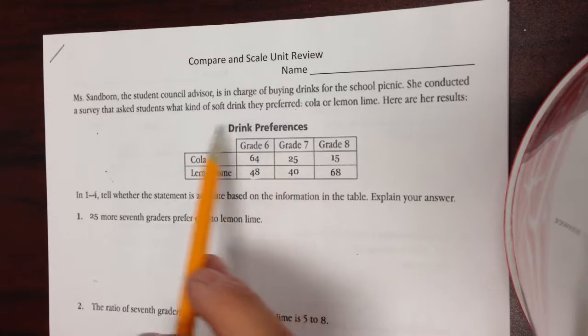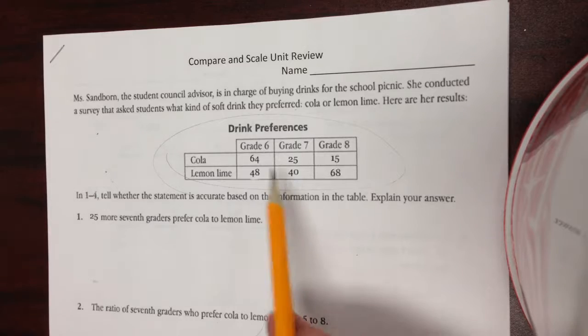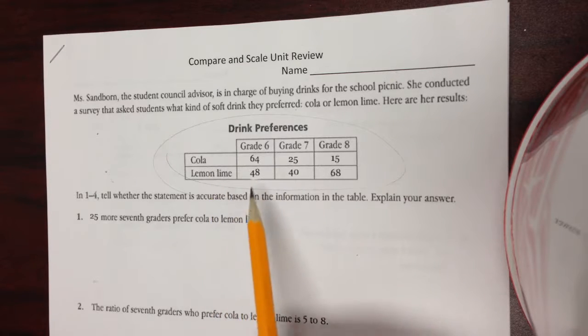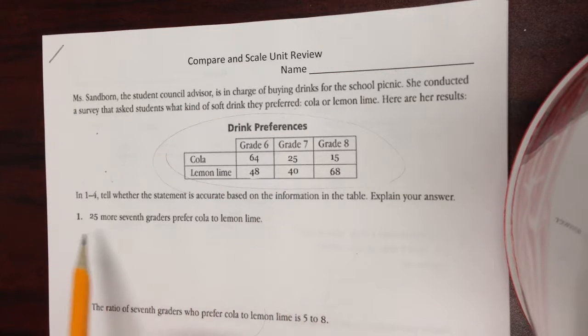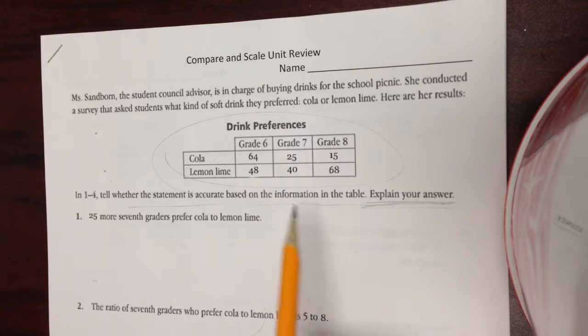So in this one, looking at this information, students are surveyed on what do they like to drink more, cola or lemon lime, different grades. And we're going to tell whether the statement is true or false based on the information from the table. And we have to explain why it's true or false.